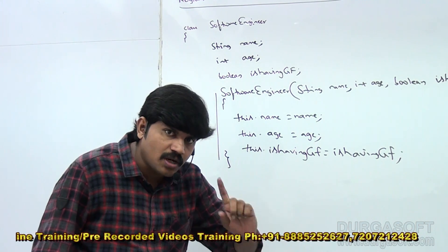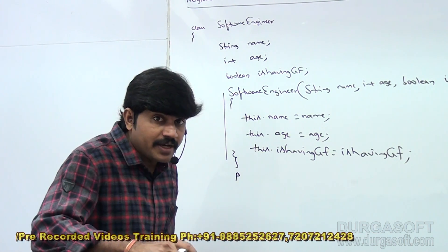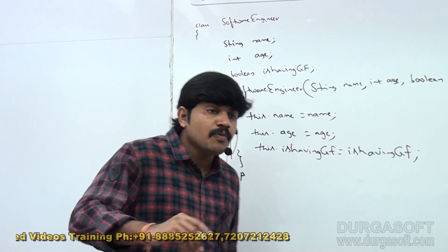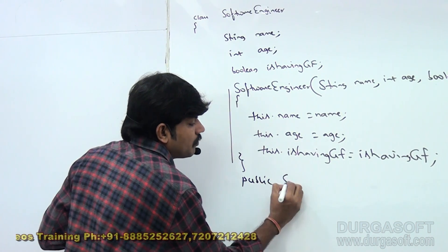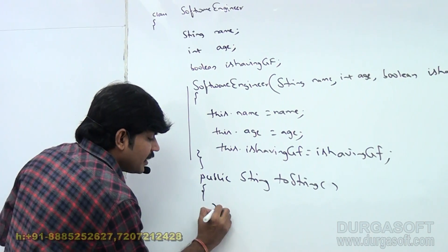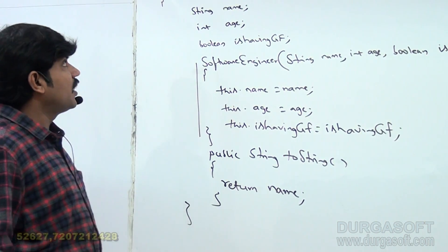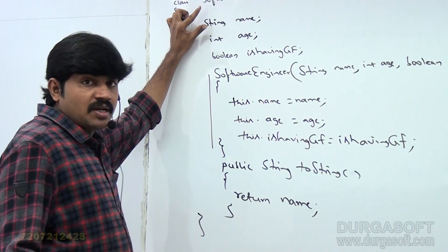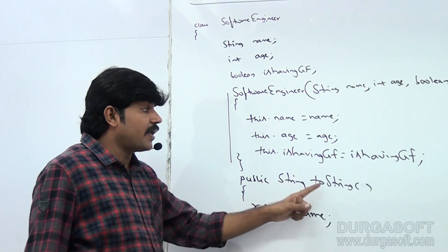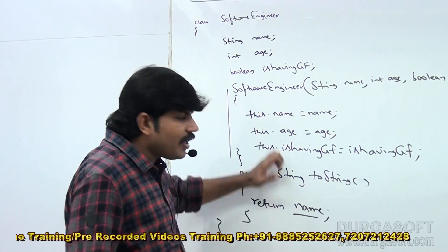Whenever we try to print a software engineer object, the toString() method will be called. Let me override it: public String toString() { return name; }. So whenever we print any software engineer object, it will just print the name.